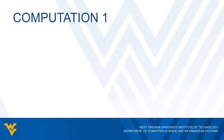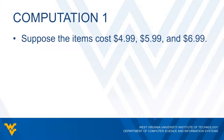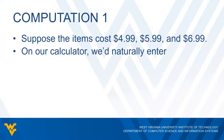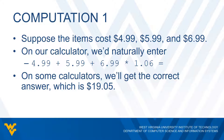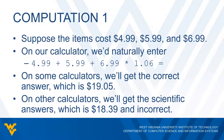Let's suppose we buy three items costing $4.99, $5.99, and $6.99. On our calculator, we would normally enter: 4.99 plus 5.99 plus 6.99 times 1.06, then equals. On some calculators we get the correct answer, which is $19.05. On other calculators — scientific ones — we actually get an incorrect answer of $18.39. So depending on the type of calculator we use, we may or may not get the correct answer.